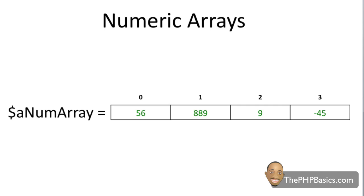Here's a really great visual example of a numeric array. I have four different numbers in each one of these boxes, and I have some numbers above each box. The numbers above each box are referred to as indexes, and the numbers inside the boxes are referred to as elements assigned to this array variable. Something to point out: arrays start with the index of zero, not one. We would normally think of starting at one, two, three, four, but with arrays we start with zero, one, two, three. This is very common in other languages as well.